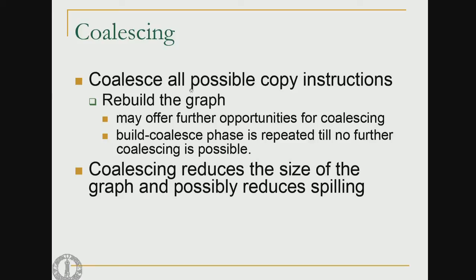The coalescing operation processes all possible copy instructions one at a time, then rebuilds the graph which may offer further opportunities for coalescing. The build-coalesce phase is repeated until no further coalescing is possible. Coalescing reduces the size of the graph and potentially reduces the amount of spilling needed.